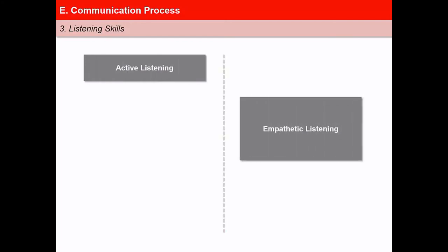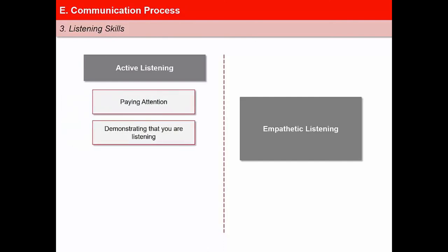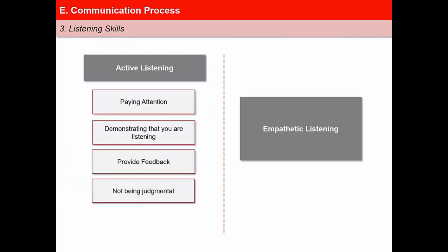Another important skill in non-verbal communication is listening. An agent should have excellent listening skills. There are two types of listening skills: active listening and empathetic listening. Active listening means that we consciously try to hear not only the words but try to understand the complete message. The elements of active listening are: paying attention, demonstrating that you are listening, providing feedback, not being judgmental, and responding appropriately. Empathetic listening implies hearing and listening patiently and with full attention to what the other person has to say, even when you do not agree with it.